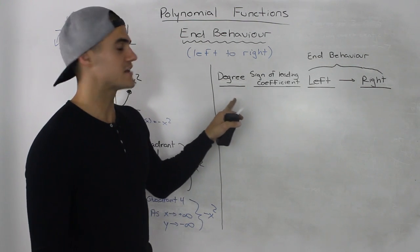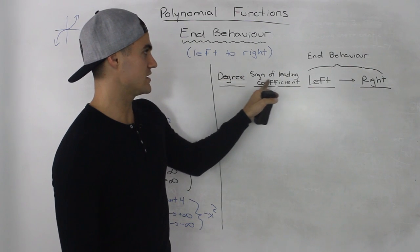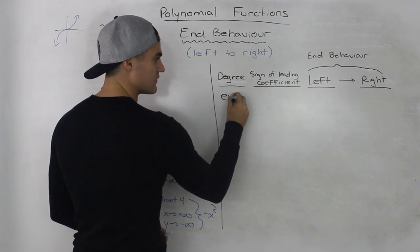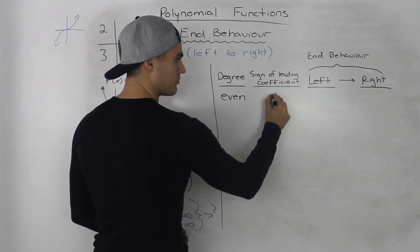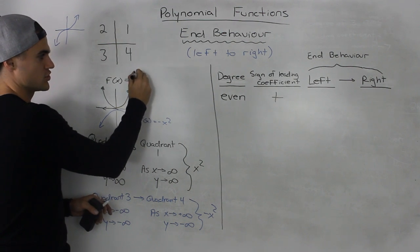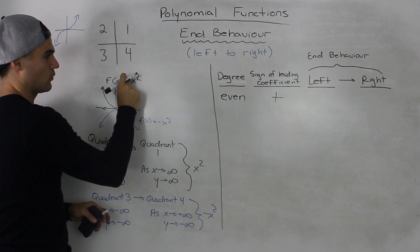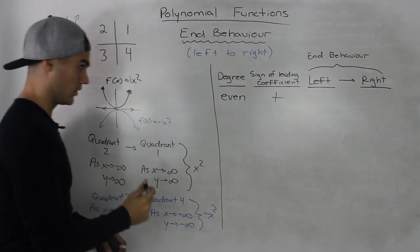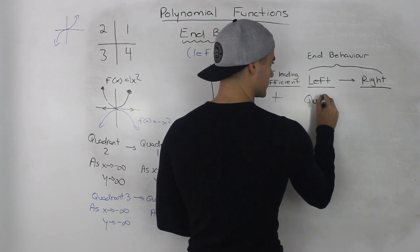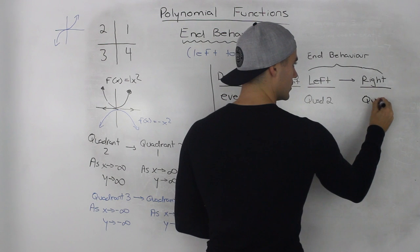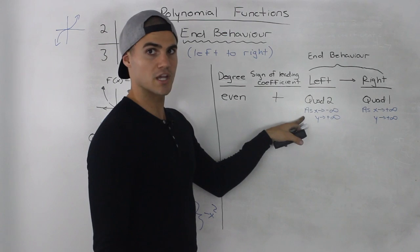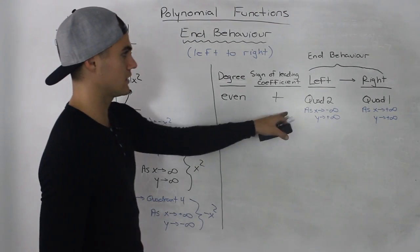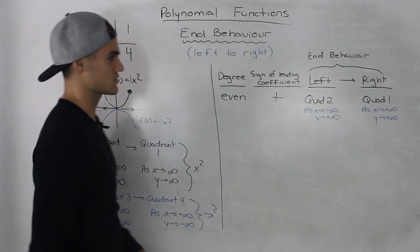The end behavior of a polynomial function depends on two things always: the degree and the sign of the leading coefficient. The first case is if the degree is even and the sign of the leading coefficient is positive — we already did that example with x squared. The degree 2 is even and the leading coefficient 1 is positive, so it's this parabola and the end behavior was from quadrant 2 to quadrant 1. For quadrant 2, as x goes to negative infinity, y is going to positive infinity. For quadrant 1, as x goes to positive infinity, y is also going to positive infinity.